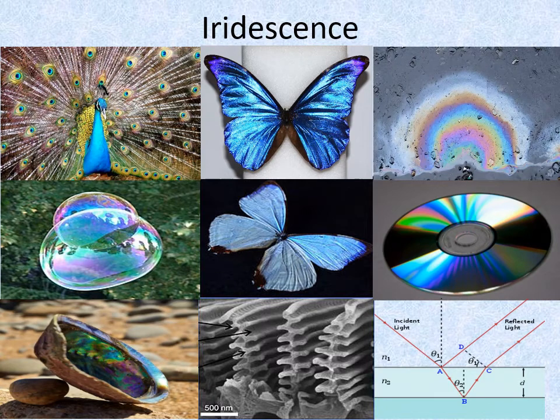Iridescence is the often beautiful phenomenon of certain surfaces that display rainbow patterns or appear to gradually change colour as the angle of view or the angle of illumination changes. Examples include soap bubbles, feathers, butterfly wings, sea shells and certain minerals.